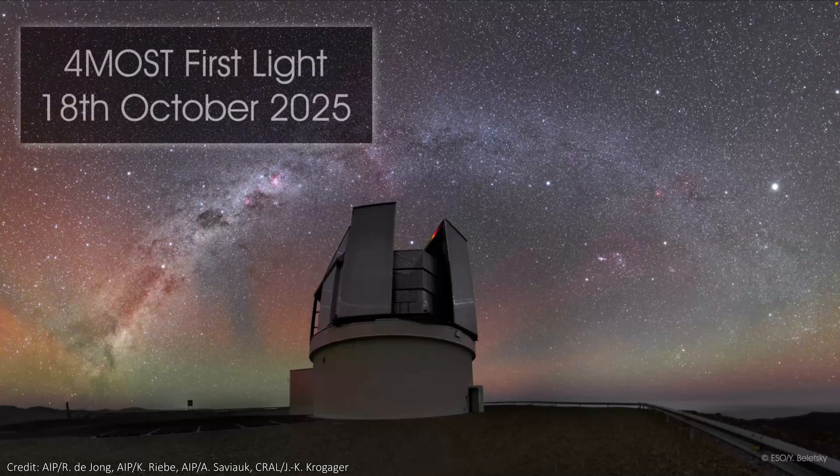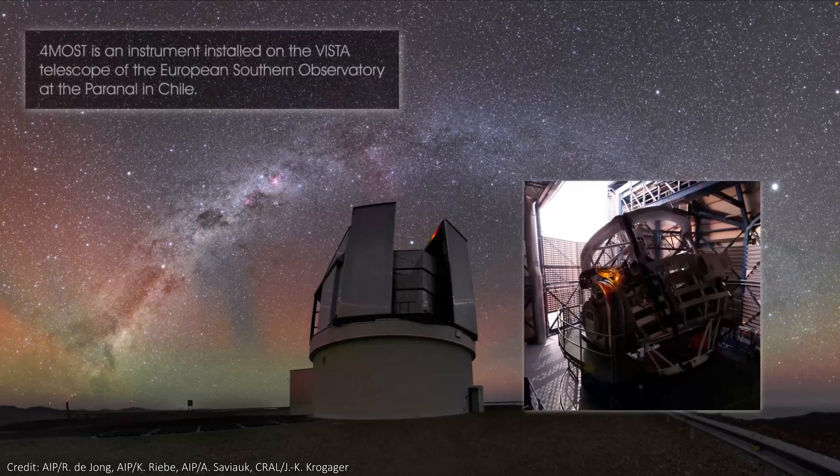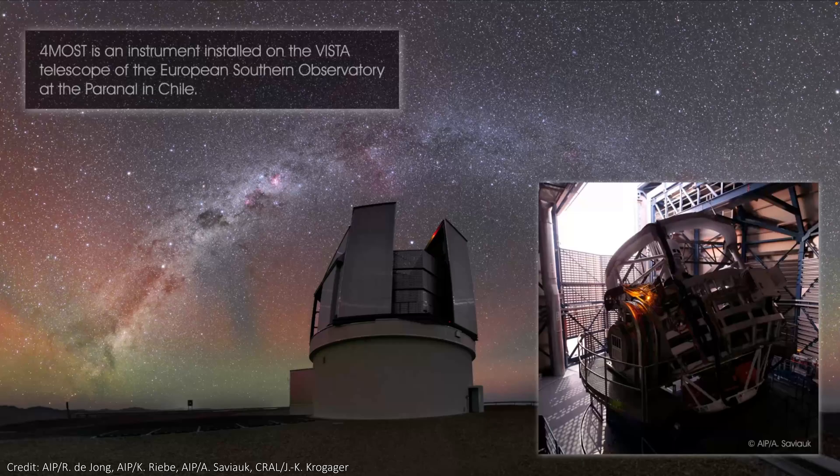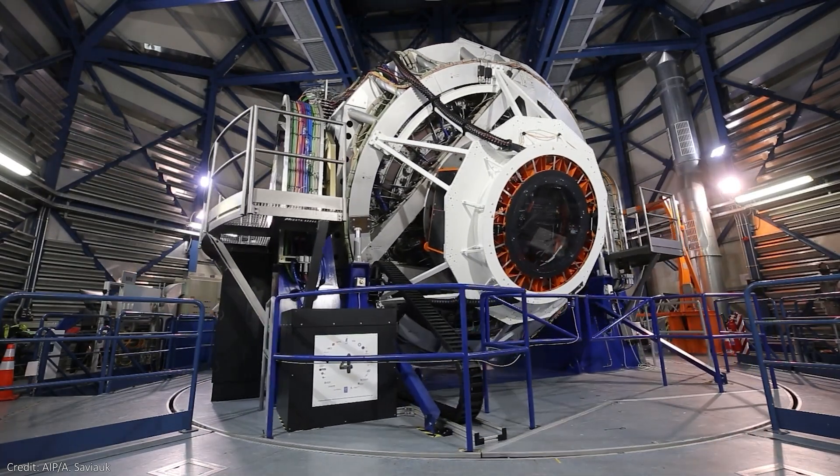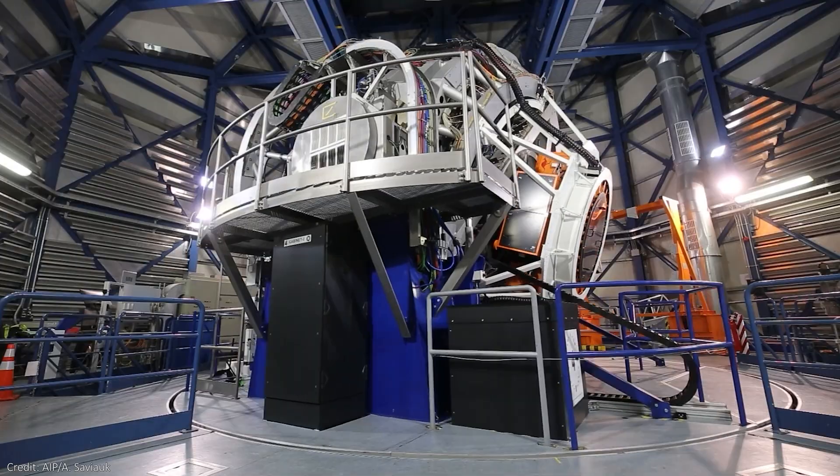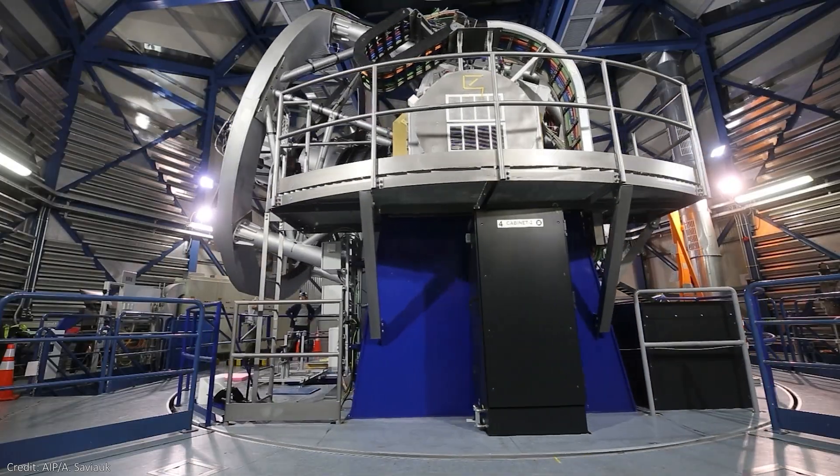On a 4-meter telescope in Chile, a brand new instrument called Foremost has just had its first light. This is something pretty special. It actually doesn't take images, but will produce some remarkable science anyway.